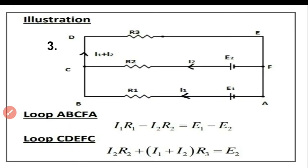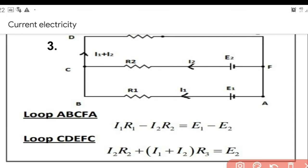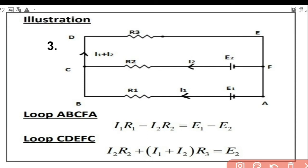Coming to the second loop: B, C, D, F, B. This is the loop direction. Going from B, first we come across R3 where current I3 flows — loop direction and current direction are the same, so I3R3 is positive. Next is R2 through which current I2 flows, but loop direction and current direction are opposite, so that term is negative: minus I2R2. In that loop there are no cells, so the sum must equal zero: I3R3 − I2R2 = 0.